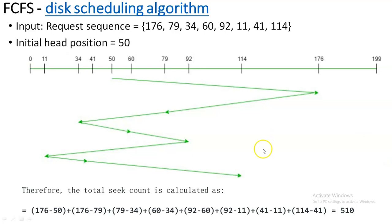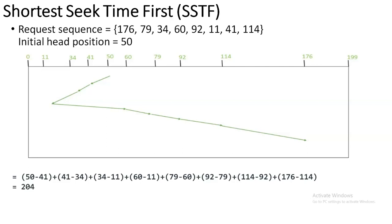The next algorithm is Shortest Seek Time First (SSTF). Similarly to the first algorithm, the question will give you the request sequence and the starting head position. You draw the scale from 0 to the highest integer, which is 176, with the maximum scale value being 199. Similarly to the previous one, you arrange all the numbers in increasing order. Initially you are going to begin, and the starting head position is 50.